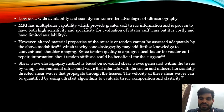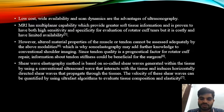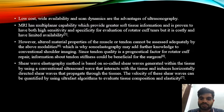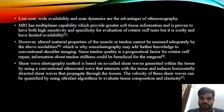Since tendon quality is a prognostic factor for rotator cuff repair, information about tendon stiffness could be beneficial for the surgeon. Shear wave elastography method is based on so-called shear waves generated within the tissue by using a conventional ultrasound wave that interacts with the tissue, and it uses horizontally directed shear waves that propagate through the tissues. The velocity of these shear waves can be quantified by using ultra-fast algorithms to evaluate tissue composition and elasticity.